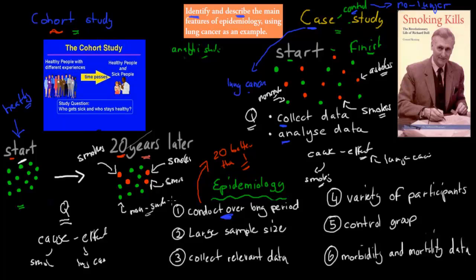We also want to have a larger sample size. We want a sample size of about 1,000 or more. The reason is that if only four people out of ten develop lung cancer, you could say that's maybe random. But if we have 1,000 participants and 400 of them develop lung cancer, that's something hard to ignore — that's not just randomness. There must be some relationship. The larger the sample size, the higher the likelihood that the actual data is relevant.